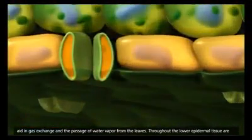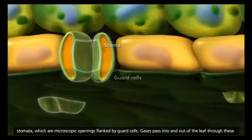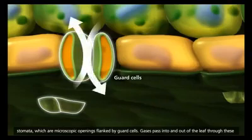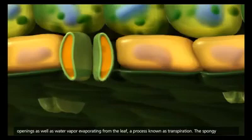Throughout the lower epidermal tissue are stomata, which are microscopic openings flanked by guard cells. Gases pass into and out of the leaf through these openings, as well as water vapor evaporating from the leaf, a process known as transpiration.